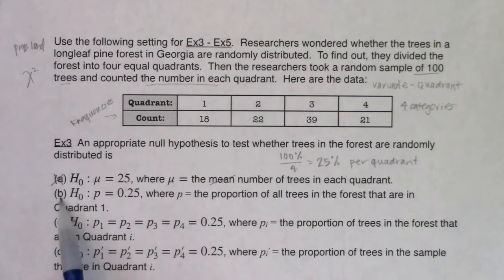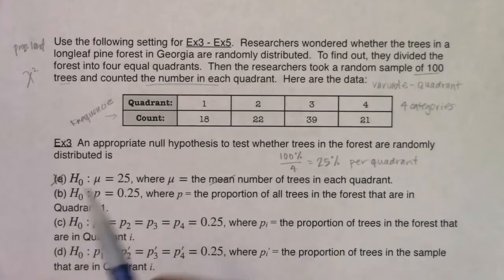So if I look at b, it says at least I have a proportion here, and it's just saying let p equal 25%, where p is the proportion of all trees in the forest that are in quadrant one. Well, I'm not just interested in the trees in quadrant one, I'm interested in all four quadrants, not just one. So that's no good.